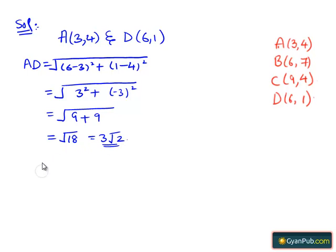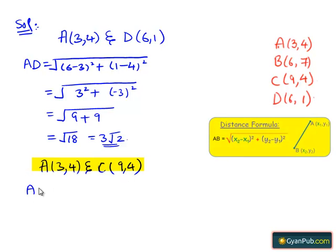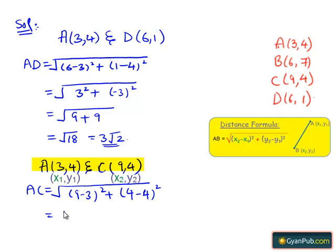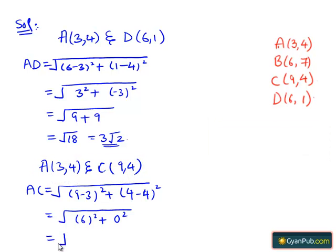Taking the diagonal points A(3, 4) and C(9, 4), by applying the distance formula we get AC = √((9−3)² + (4−4)²) = √(6² + 0²) = √36 = 6.